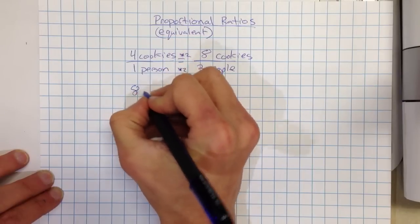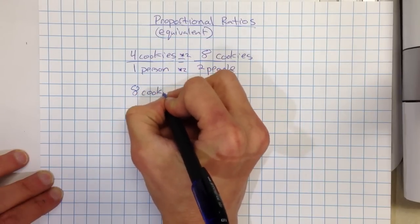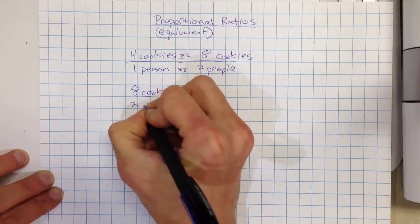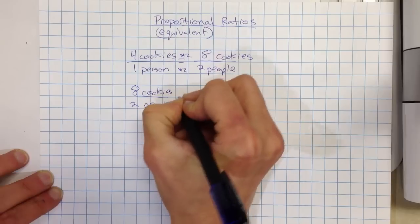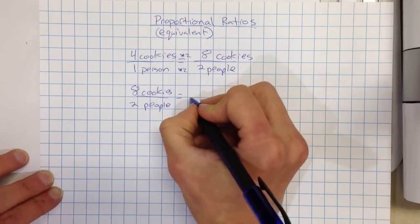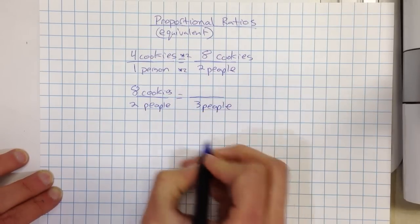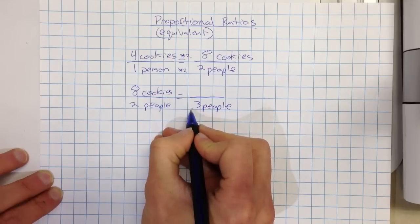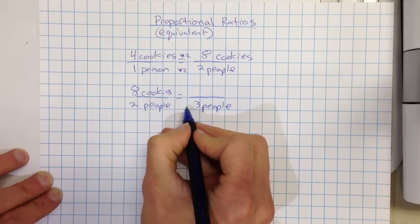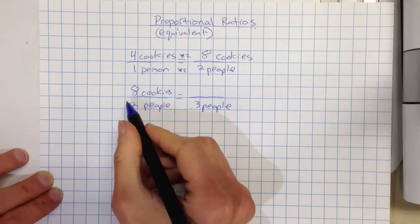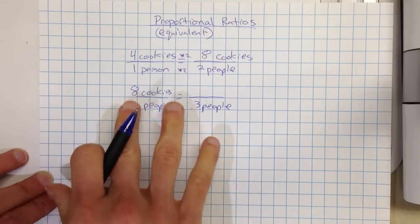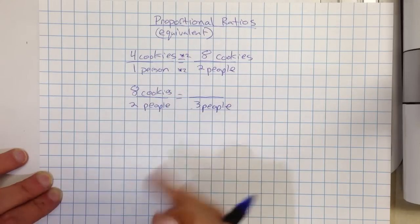But sometimes we'll do something like this. So say we have eight cookies for two people, and I want to figure out, okay, well, how many would that then be for three people? Now I can't turn two into three with an easy multiplication problem. I can't really, that doesn't transfer as easily.